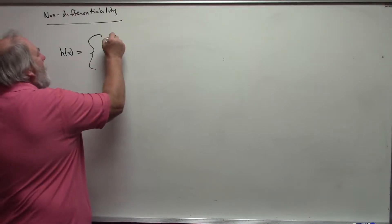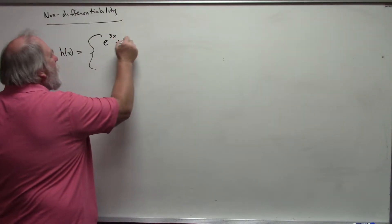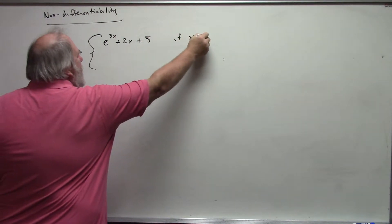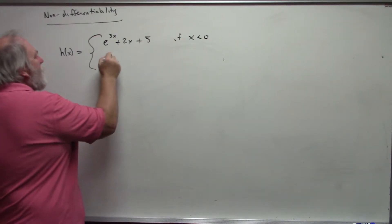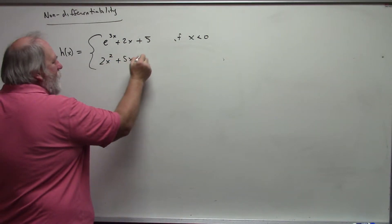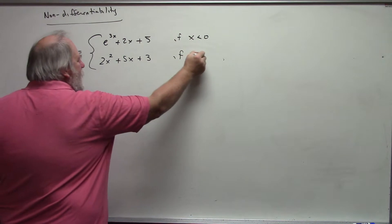E to the 3x plus 2x plus 5 if x is less than 0, and 2x squared plus 5x plus 3 if x is greater than 0.